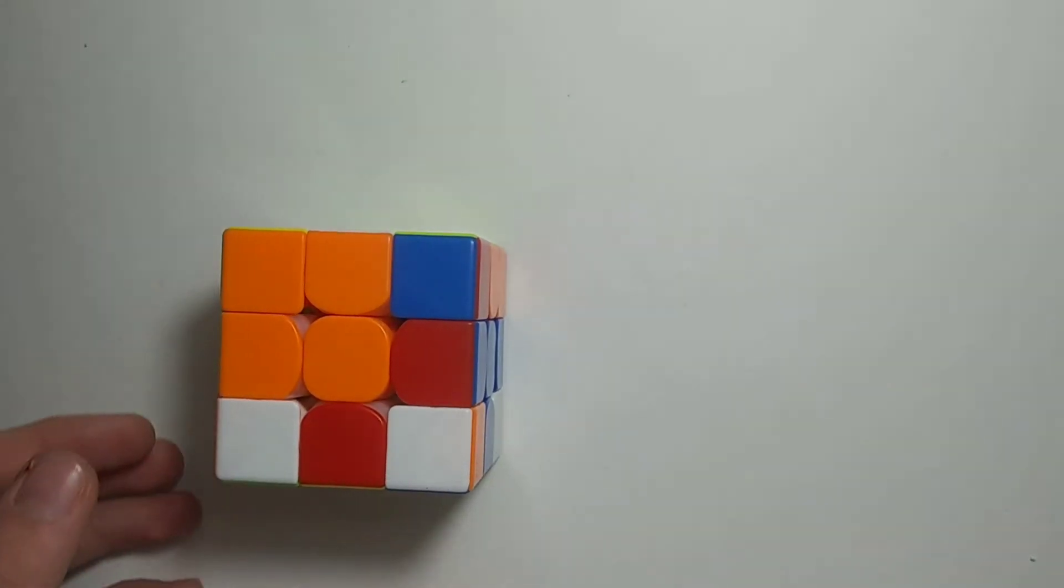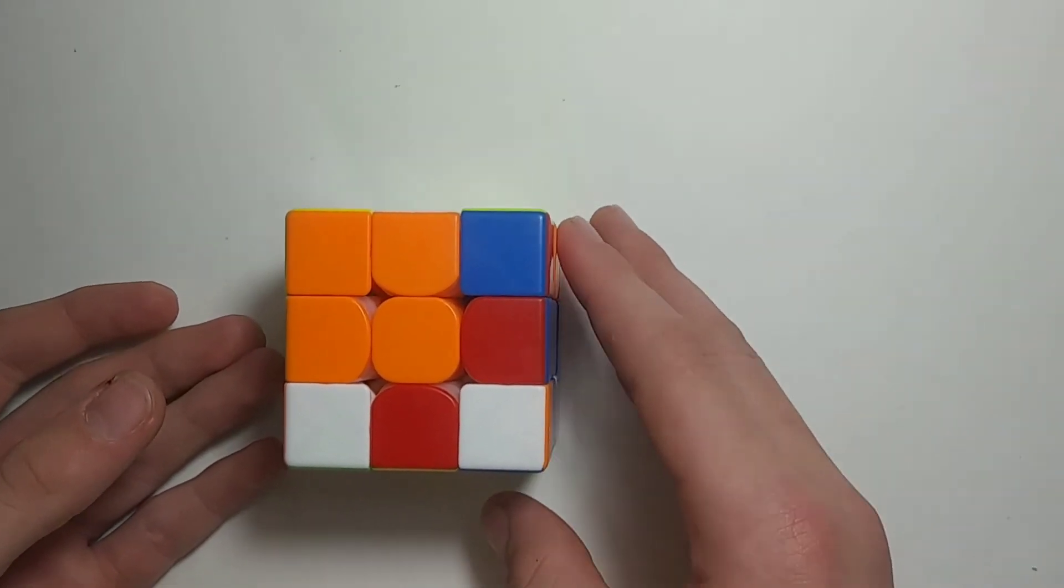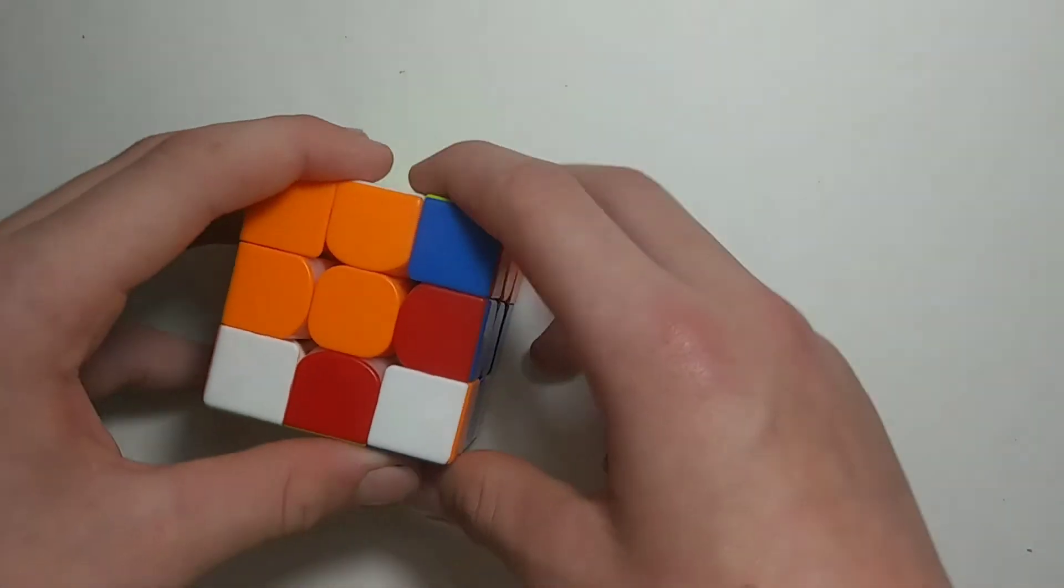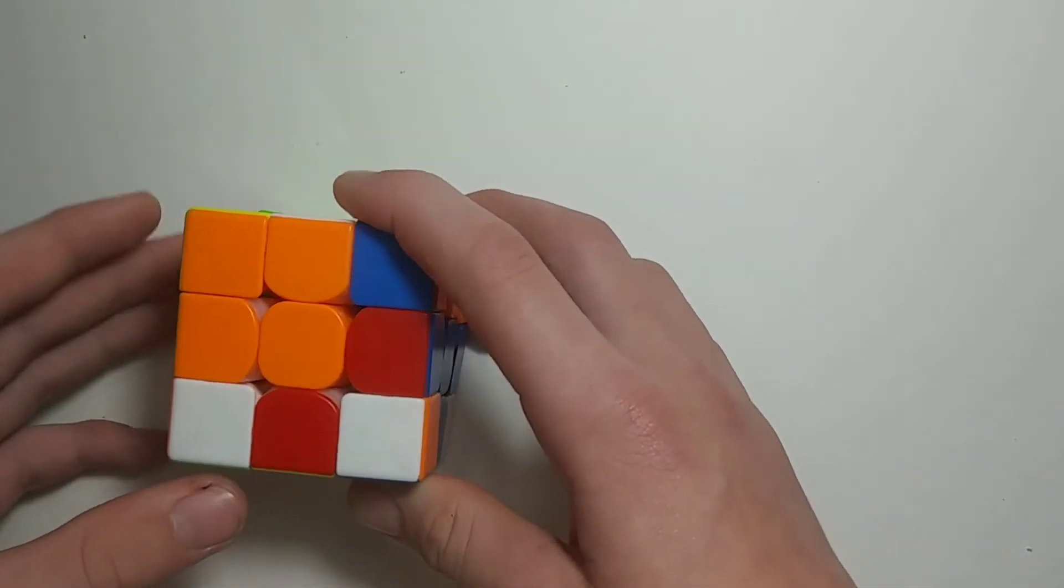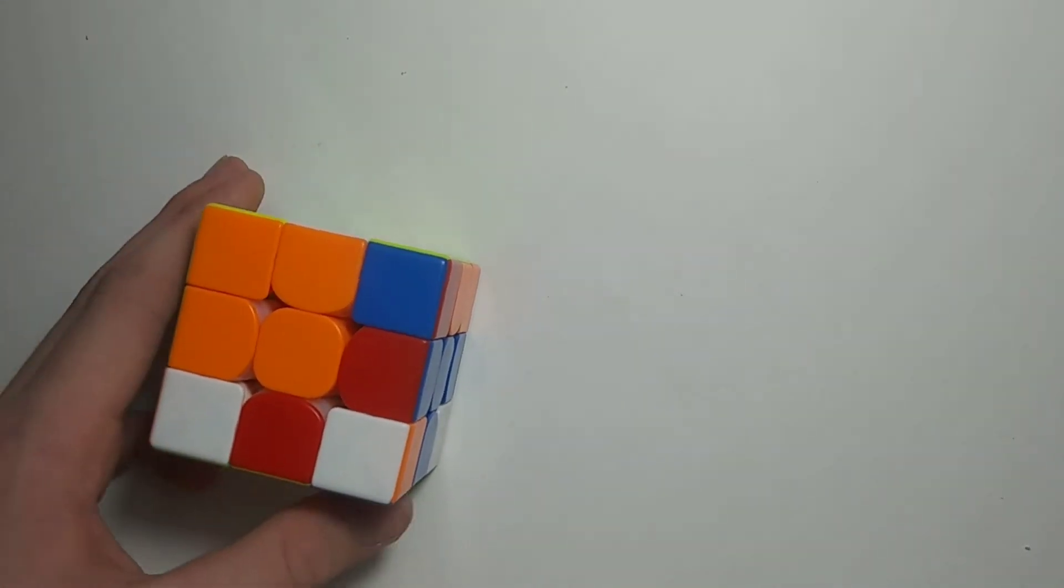My goal for this event is to get a sub-50 average and sub-40 single. Sadly, I'm not that good at 3x3 one-handed or regular 3x3 because I don't practice those often. There's really no events that I'm good at in this comp. Maybe next time they can have Pyraminx or Square-1 - that'd be great.